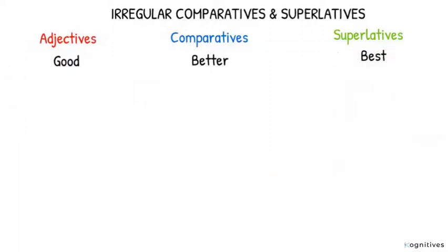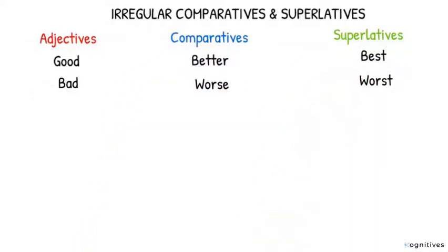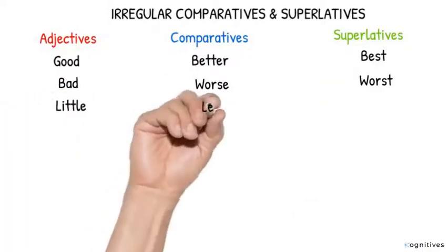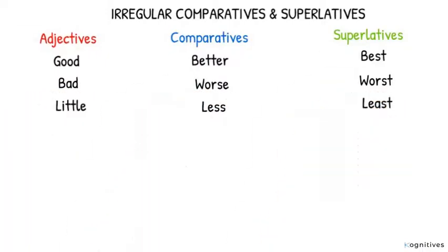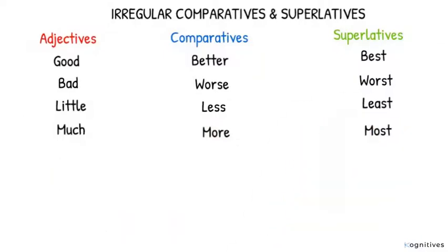Number two: Bad, worse, worst. Number three: Little, less, least. Number four: Much, more, most. Five: Many, more, most.